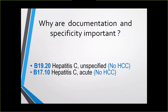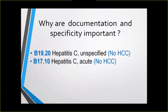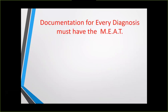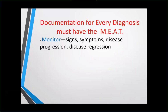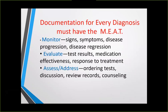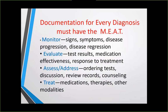Documentation specificity matters. 'Hepatitis C unspecified' — no RAF. 'Hepatitis C acute' — no RAF. But 'chronic hepatitis C' implies ongoing surveillance and treatment, giving you a RAF score of 0.165 by hitting HCC category 29. The MEAT framework is essential: Monitor — signs and symptoms; Evaluate — test results, medication effectiveness, response to treatment; Assess — ordering tests, discussing, reviewing records, counseling; Treat — medications, therapies, other modalities.